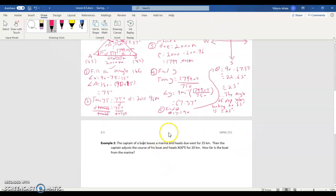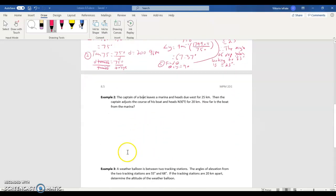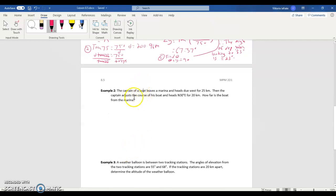Let's take a look at the next question. We're going to take a look at at least how to approach it, and then we'll finish it in the next video. The captain of a boat leaves a marina and heads due west 25 kilometers, and the captain adjusts the course of his boat and heads north 30 east for 20 kilometers. How far is the boat from the marina? In the next video, we're going to draw a sketch to explain this, and then we're going to try to solve the problem.